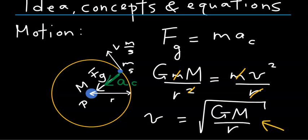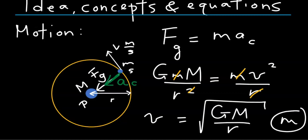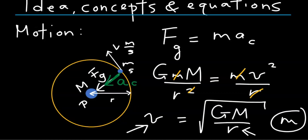This equation shows that we cannot choose orbit radius r and speed v independently — if we choose r, the speed is determined. Another key conclusion is that the satellite's mass does not appear in the equation; capital M is the mass of the planet. So if you want to place a satellite of any mass m at distance r from the center of the planet, it must have the speed given by this equation.